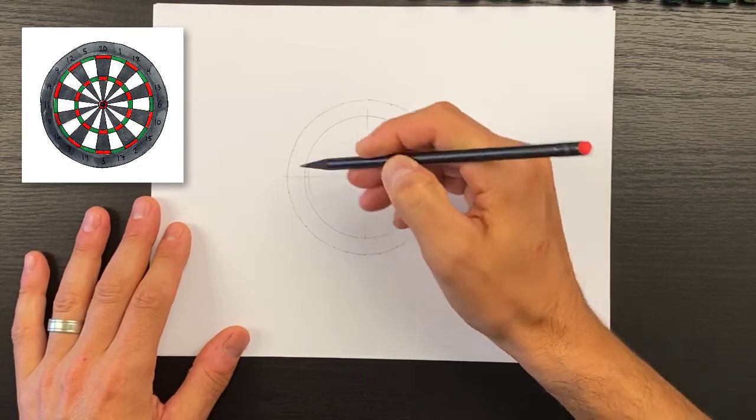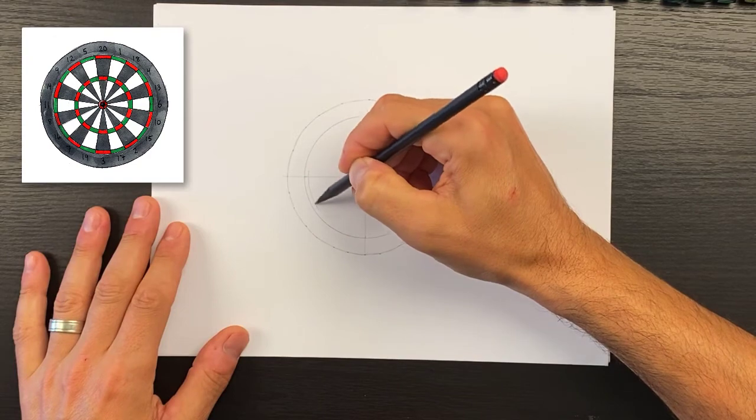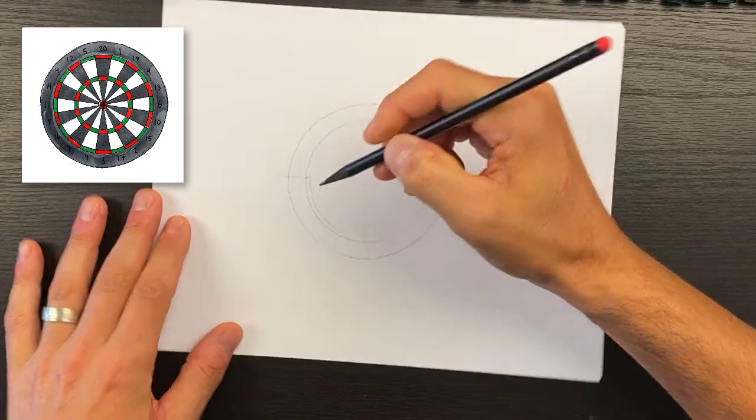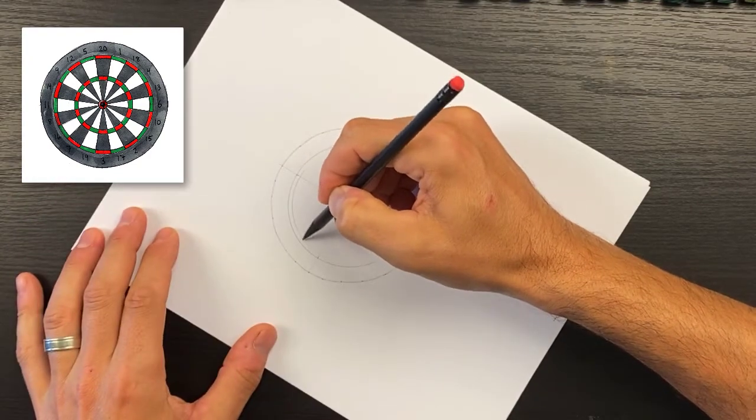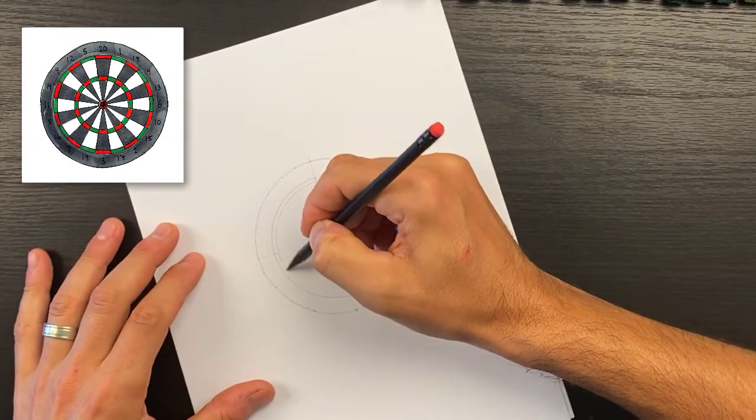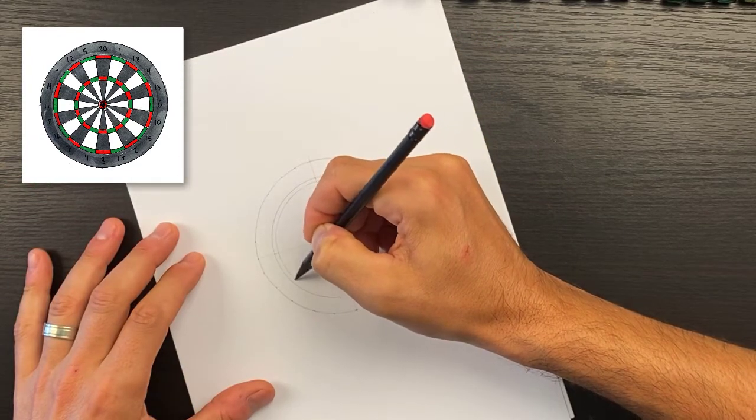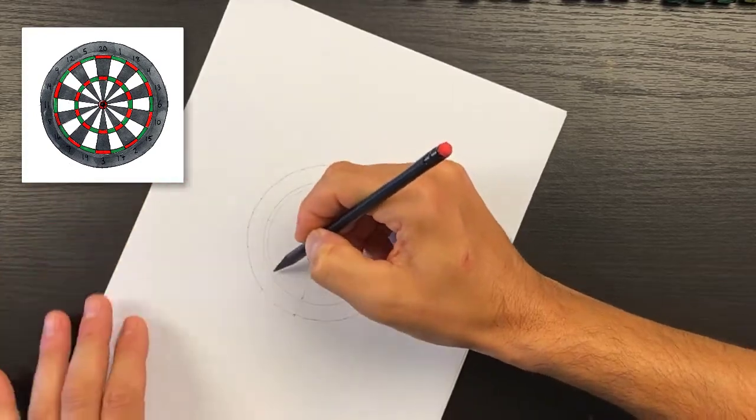You can do the exact same thing if you want with spacing points, but since this is fairly close, I'm just going to eyeball it and try to follow the contour of this outer ring as best I can.